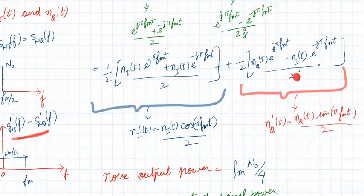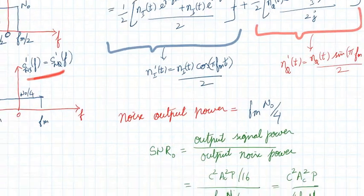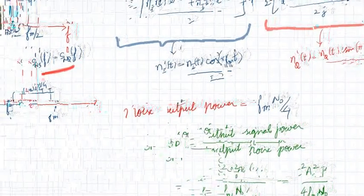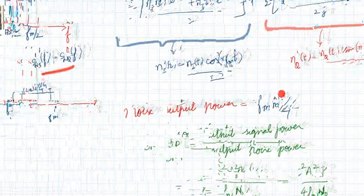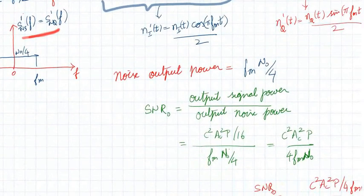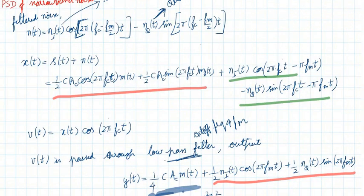The j term in the quadrature component does not affect the power since we take the squared magnitude. The output noise power is fm·N0/4. So we have derived both: output signal power = c²Ac²P/16, and output noise power = fm·N0/4.